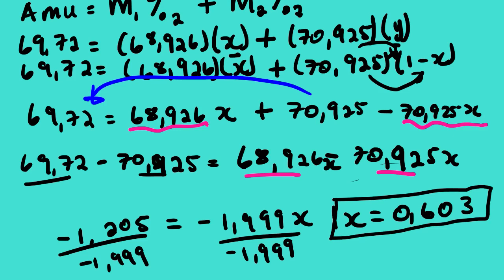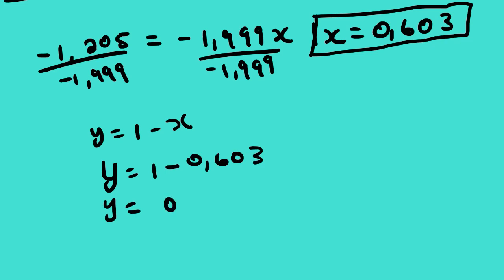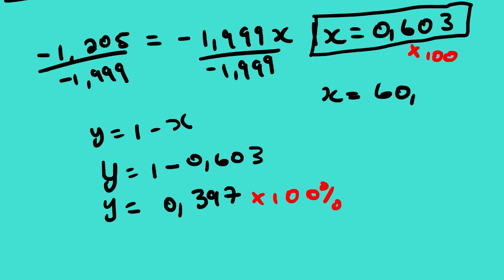So x equals 0.603, which is the decimal percentage abundance of the first isotope. To find the second one, we said y equals 1 minus x, so y equals 1 minus 0.603, which equals 0.397. To convert from decimal to percent, we multiply by 100. So the first isotope is 60.3% and the second is 39.7%.